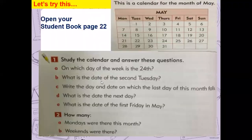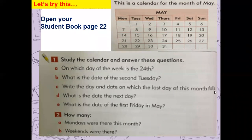Now, this is from your student book page 22. You have to first read the calendar for the month of May and answer the following questions: On which day of the week is the 24th? What is the day of the second Tuesday? Write the day and date on which the last day of this month falls. What is the date the next day after the last day of the month? What is the date of the first Friday of May? These are easy questions — just pause the video, answer them, and resume when you are done.